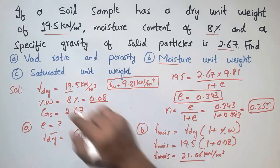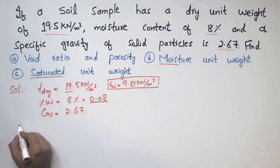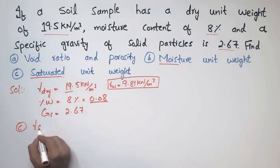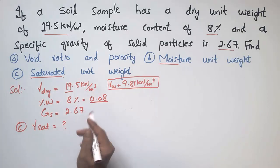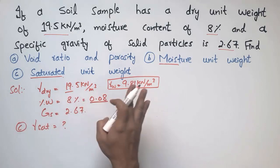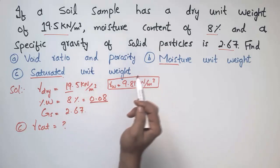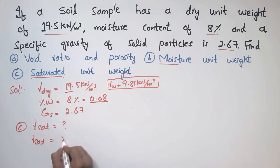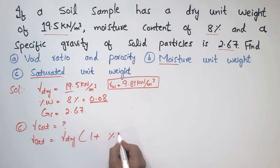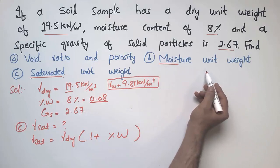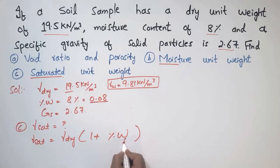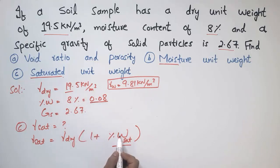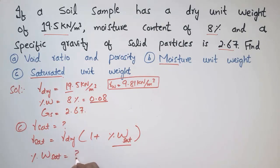The last task is to find the saturated unit weight. The saturated unit weight is the unit weight of the soil when all the void spaces are filled with water — no remaining air voids. The formula is γ_sat = γ_dry × (1 + w_sat), similar to moisture unit weight, but here the moisture content must be the saturated moisture content, which we need to determine.